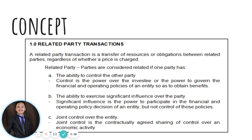If there is 20% or more of the voting power of the investee, it is presumed that the investor has significant influence over that particular entity, unless it can be clearly demonstrated that it is not the case. There are also times where an entity did not actually own 20% or more of the voting power, but they still exercise significant influence. Beyond the 20% threshold, the existence of significant influence can still be evidenced by representation in the board of directors, participation in policymaking process, material transactions between the investor and the investee, interchange of managerial personnel, and provision of essential technical information.